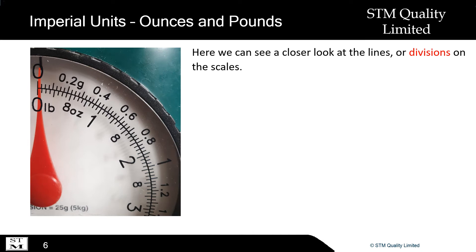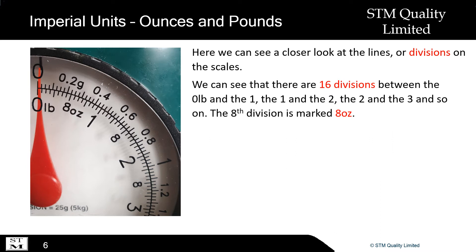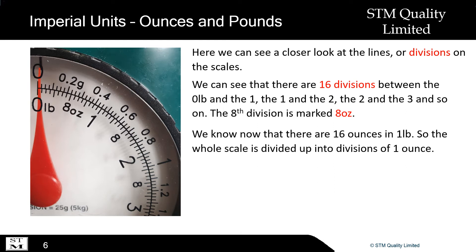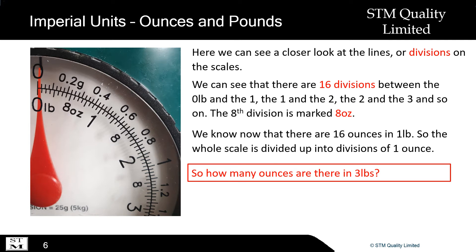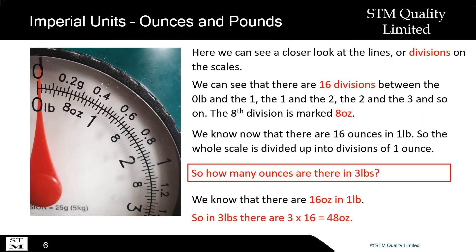Here we can see a closer look at the lines or divisions on the scales. We can see that there are 16 divisions between the nought pound and the one, the one and the two, the two and the three, and so on. The eighth division is marked eight oz — eight ounces. We now know that there are 16 ounces in one pound, so the whole scale is divided up into divisions of one ounce. So how many ounces are there in three pounds? We know that there are 16 ounces in one pound, so in three pounds there are three times 16, which is 48 ounces.